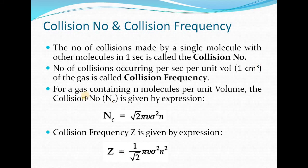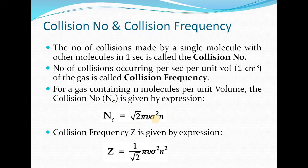For a gas containing n molecules per unit volume, the collision number nc is given by: nc = √2 · π · v · σ² · n, where n is the number of molecules per cm³, σ is the collision diameter, and v is the average velocity at temperature T. The collision frequency Z is given by: Z = (1/√2) · π · v · σ² · n², where v is the average velocity, σ is the collision diameter, and n is the number of molecules per cm³. This gives the total collisions per second per cm³.